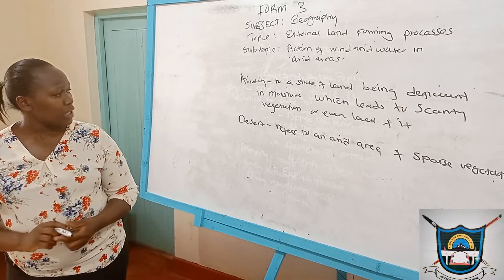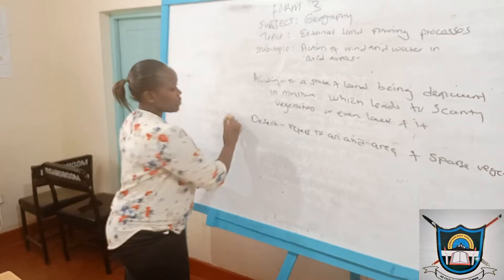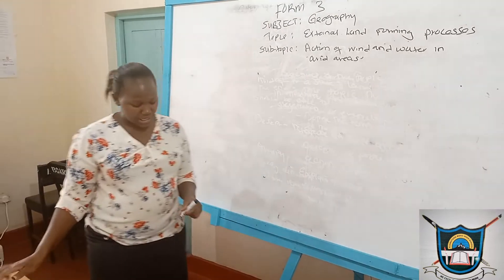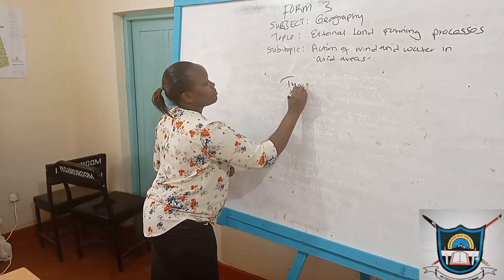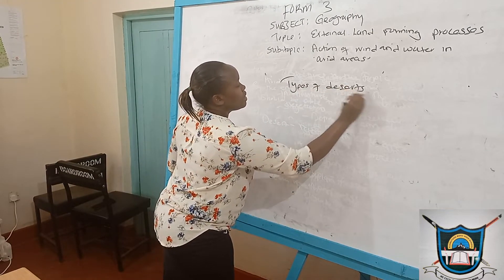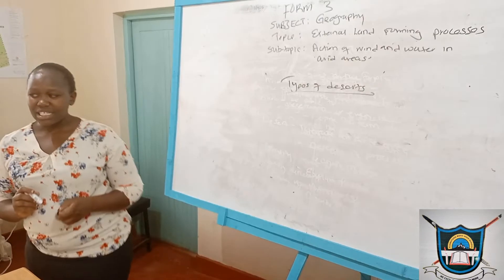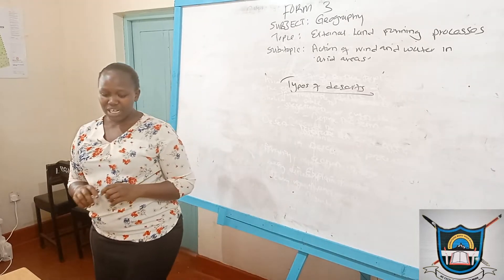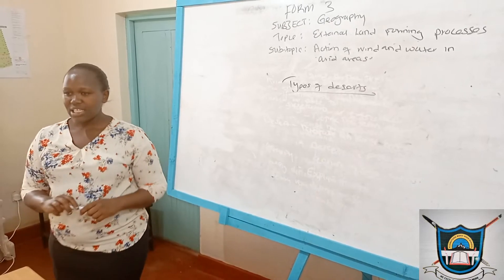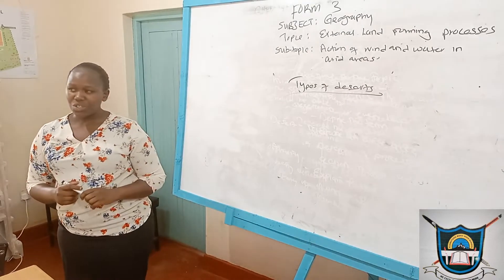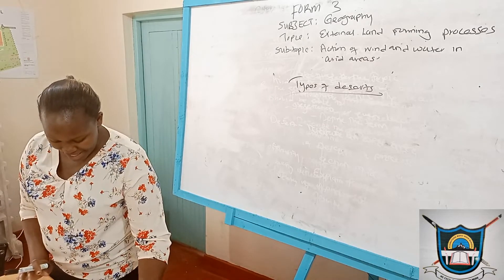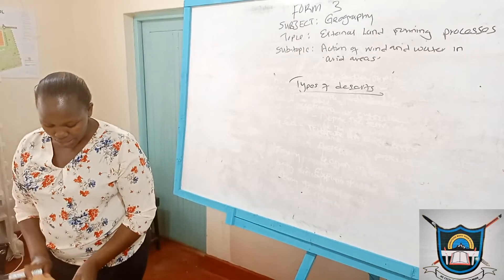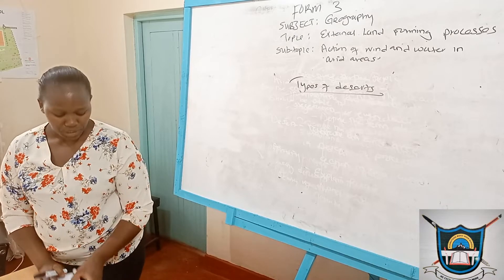From there, we are going to look at the types of deserts, which is our second objective. Deserts are categorized into three: one, according to their temperature; two, according to their location; and three, according to their surface.